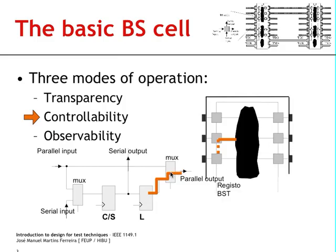While the cells are in controllability mode, the leftmost multiplexer may operate as shown at this moment or in this other way. When it operates in this mode, you are capturing what comes from the parallel input into this memory element. On the other hand, when you switch it to the lower input, you will be capturing what comes from the serial input, so you will be shifting through the serial path.